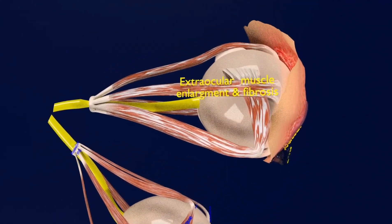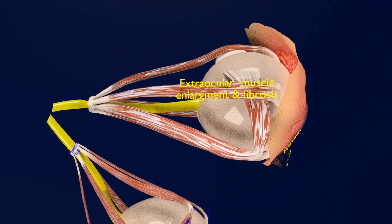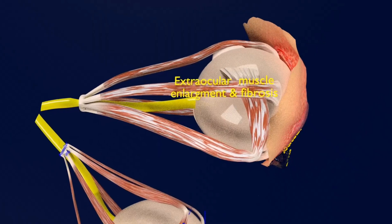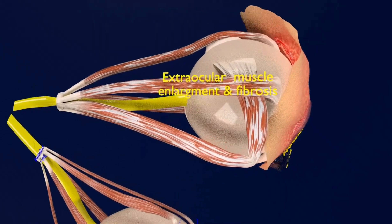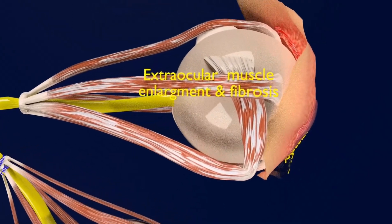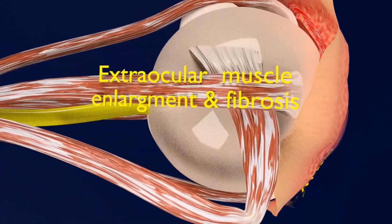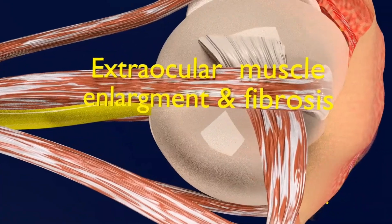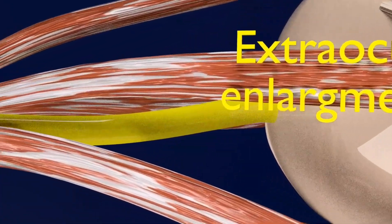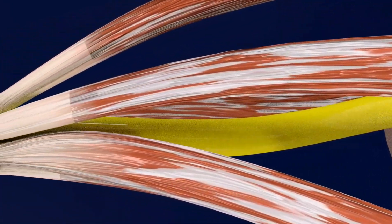Briefly defining thyroid eye lesions: thyroid eye disease is a condition in which the eye muscles, eyelids, tear glands, and fatty tissues behind the eye become inflamed.